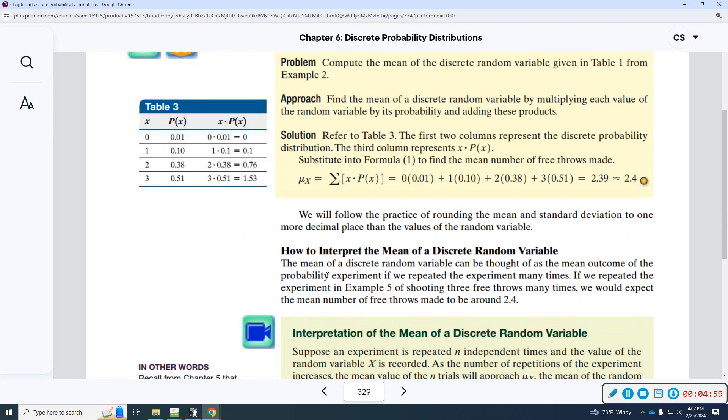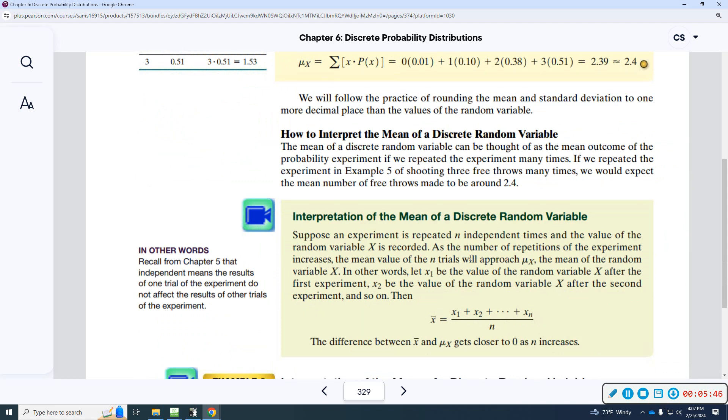How do you interpret the mean? This is very important. The mean can be thought of as the mean outcome of the probability experiment if we repeat this experiment many times. If we repeat this experiment in example 5 of shooting free throws, we would expect the mean number of free throws to be made to be around 2.4. You can't make 2.4 free throws, but this is on average. Sometimes you might make 2, sometimes you might make 3, sometimes you might make 1, sometimes you make 0. But when you average all the ones they made, it should be around 2.4. So, we would expect somebody to make roughly 2 free throws out of this experiment. That's how you interpret it. It's not telling you that's how many they're going to make, but that's on average.